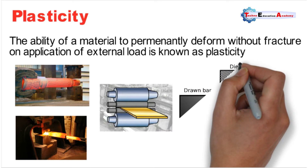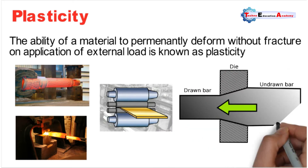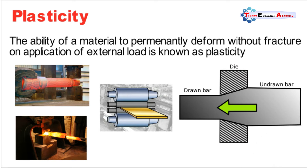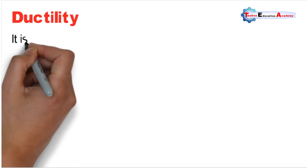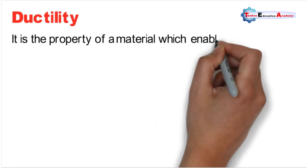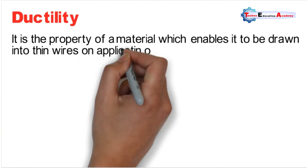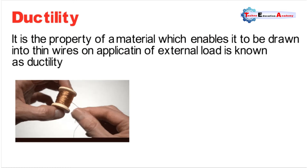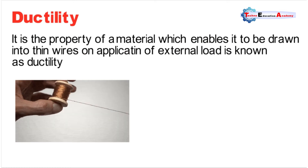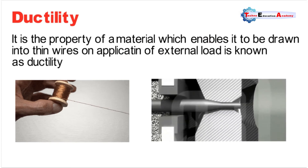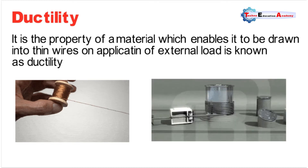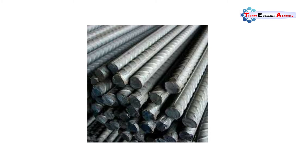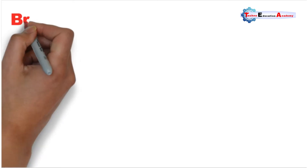The next property is ductility. Ductility is the property of a material which enables it to be drawn into thin wires on application of tensile force. The ductility of a material can be measured by the percentage elongation or reduction of cross-sectional area before rupture of a test piece. Materials with more than 15% elongation are considered as ductile. For example, mild steel is a ductile material — when you apply force through a hammer, the nail will bend but will not break.